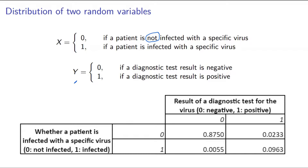Otherwise, if the diagnostic test comes back positive, the random variable Y takes a value of one. This table represents the joint distribution of these two random variables, each taking a value of zero or one. The probability that a patient is not infected with the virus and the test also results in a negative result is 0.8750. We write that as P(X=0, Y=0) = 0.8750.